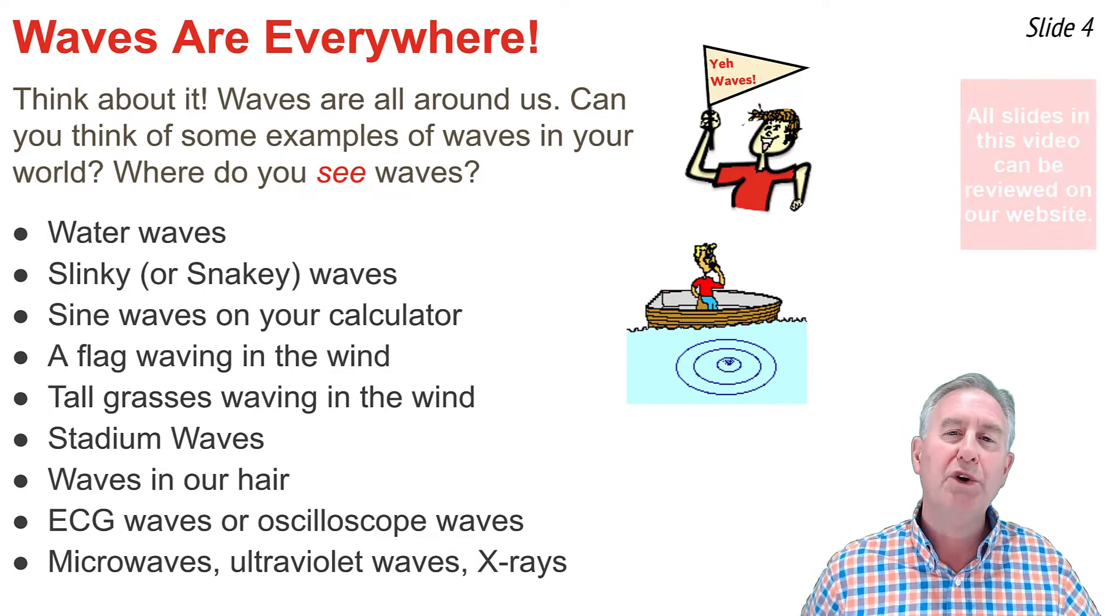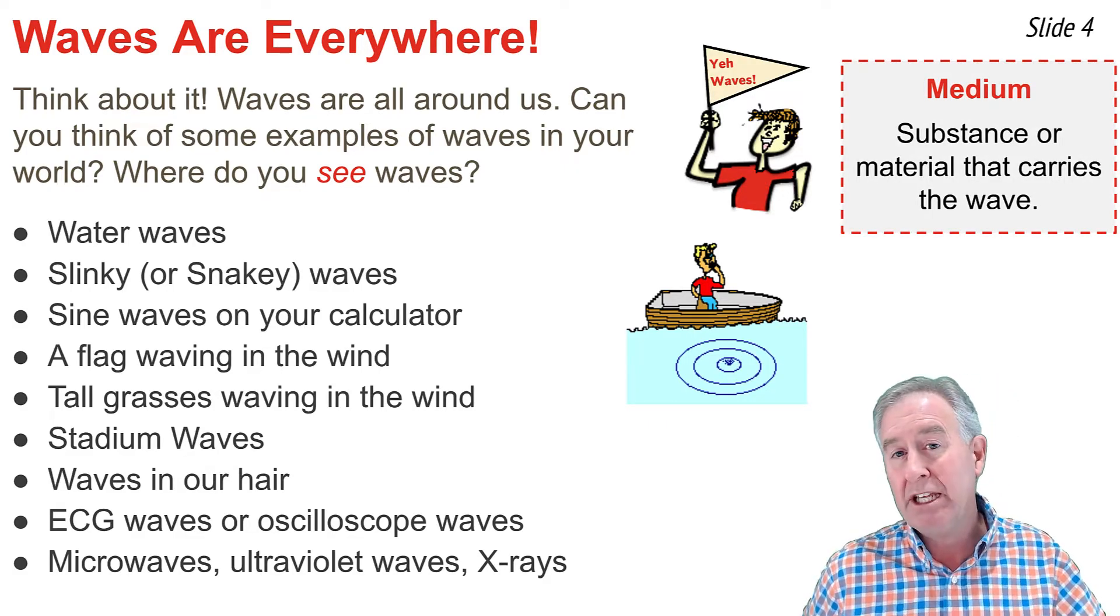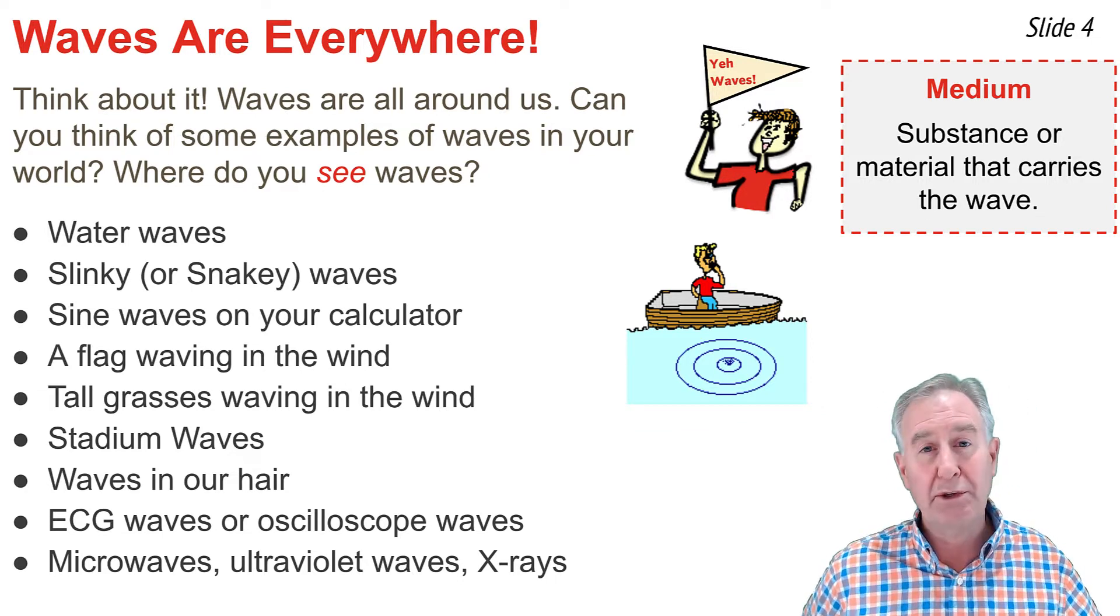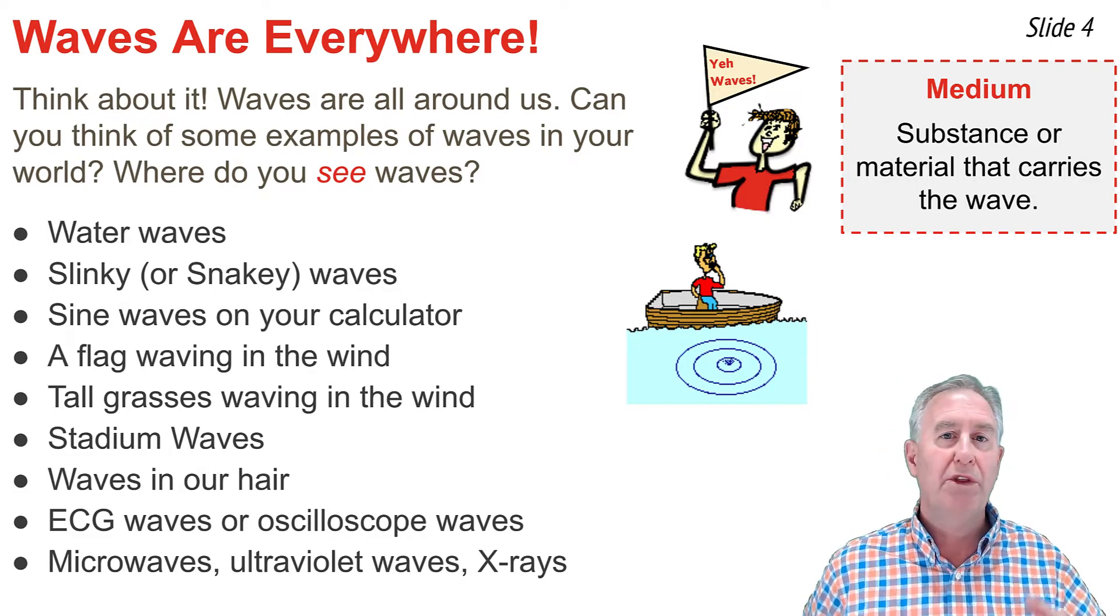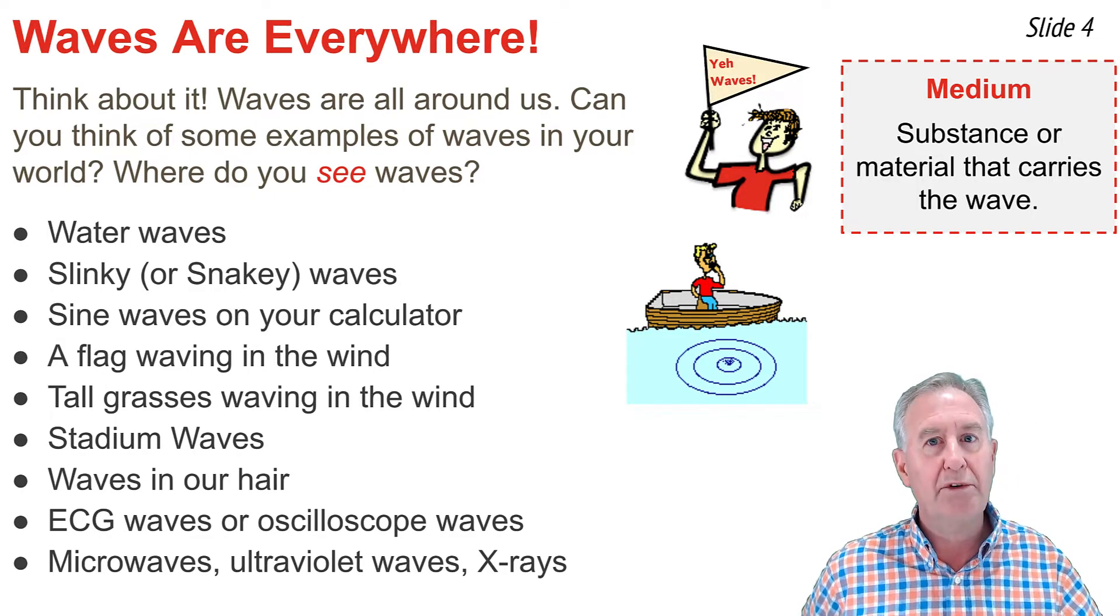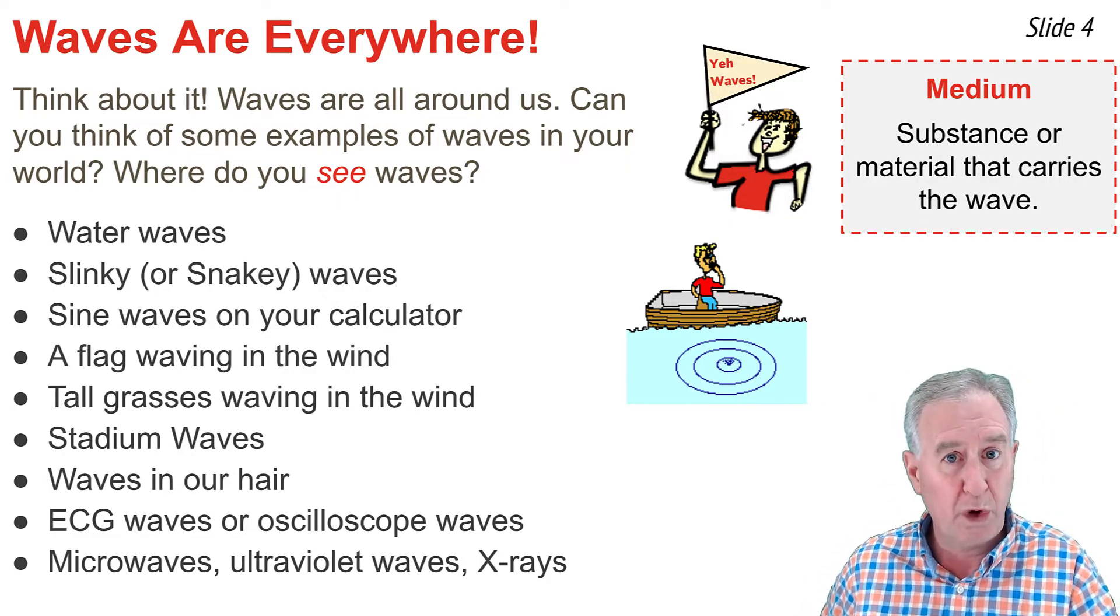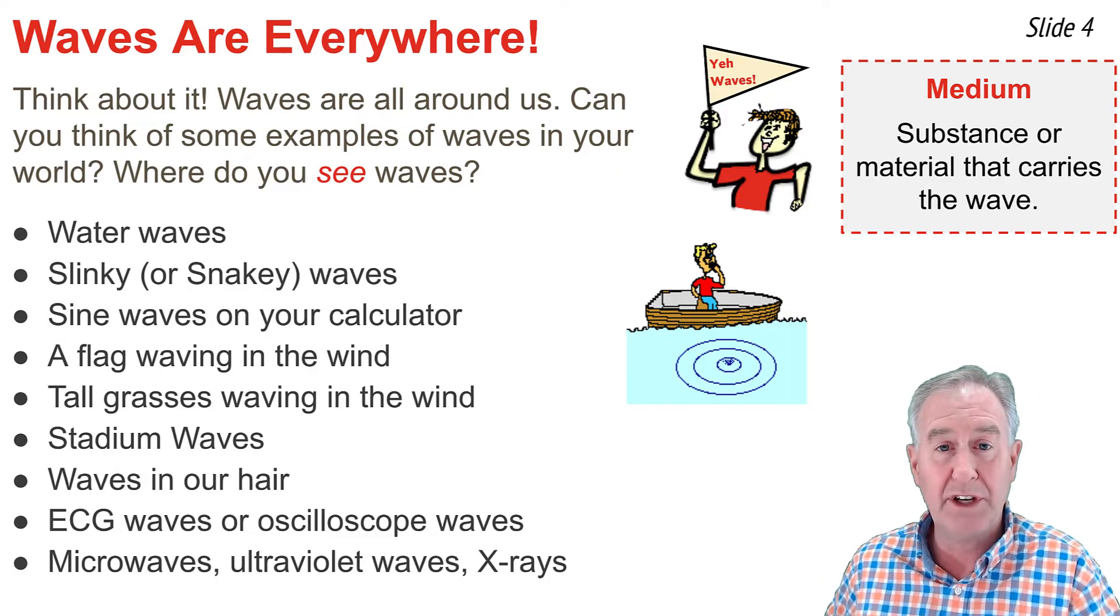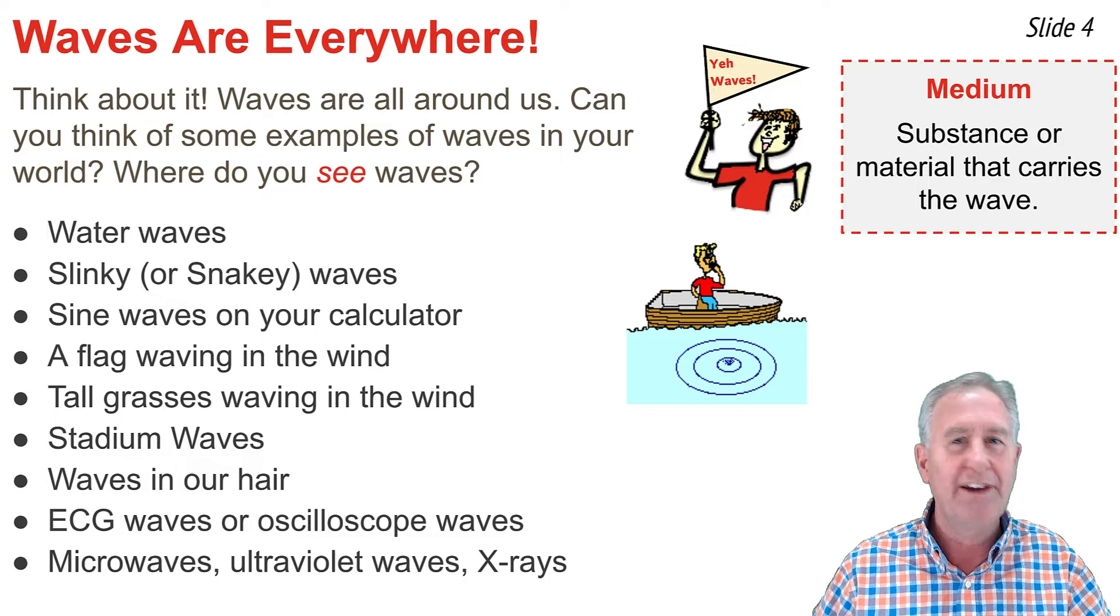Now, as we talk about waves, you're going to have to distinguish between a wave and the medium through which the wave travels. The medium is not the wave. The medium is simply the substance or material that carries the wave. You've likely heard of the news media that carries the news to your home. It could be the newspaper or the television news show, or it could be the internet news. The news travels through that news media to your home. As we talk about waves like water waves, which have water as the medium, or slinky waves that have slinky as the medium, or stadium waves that have the fans in the stadium as the medium, you'll have to distinguish between the wave and the media.